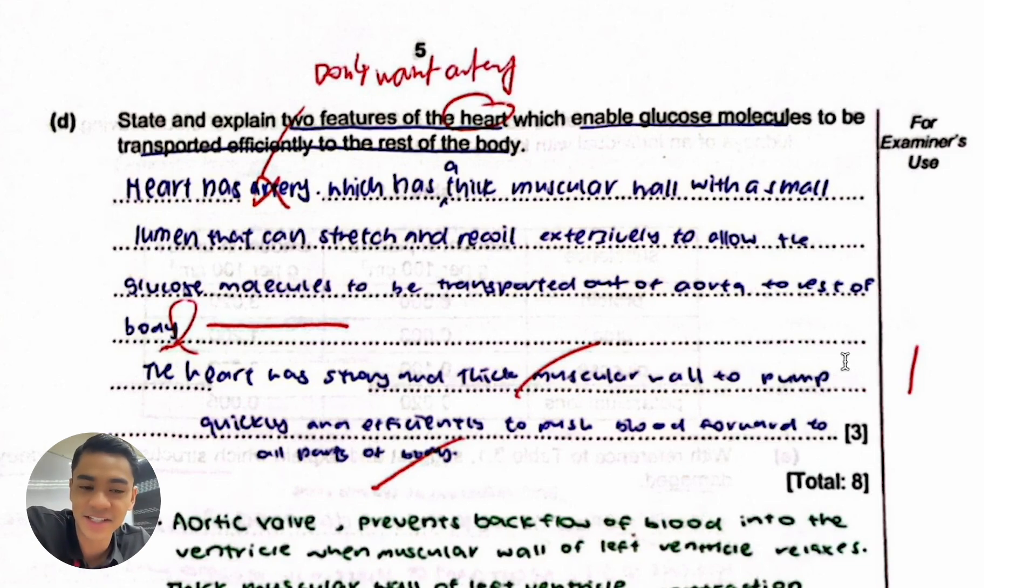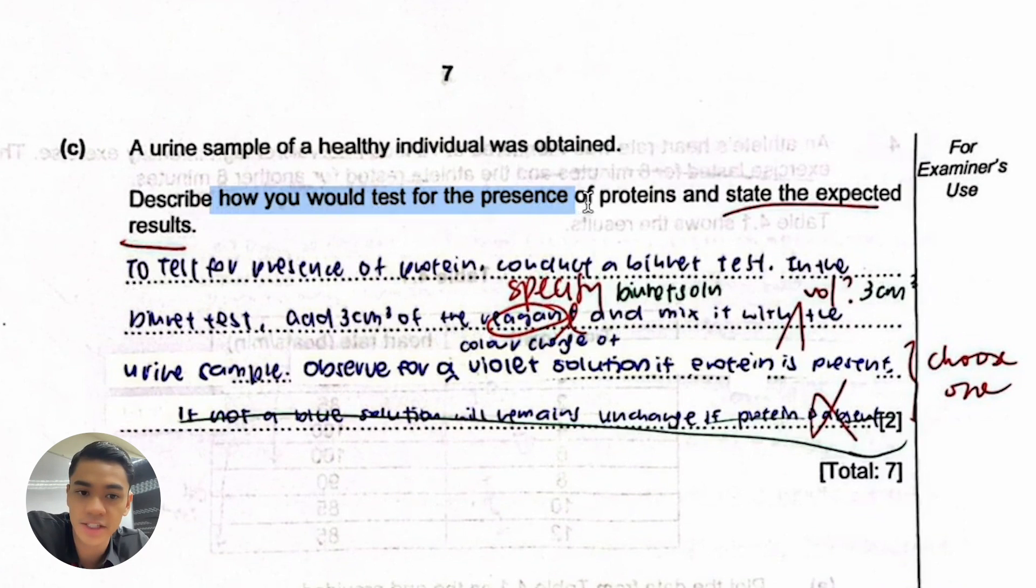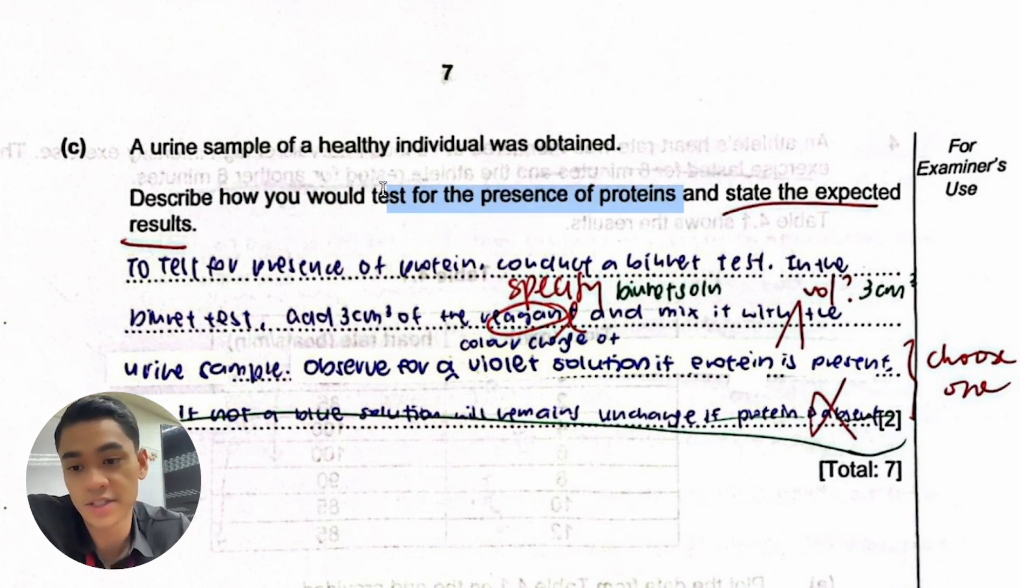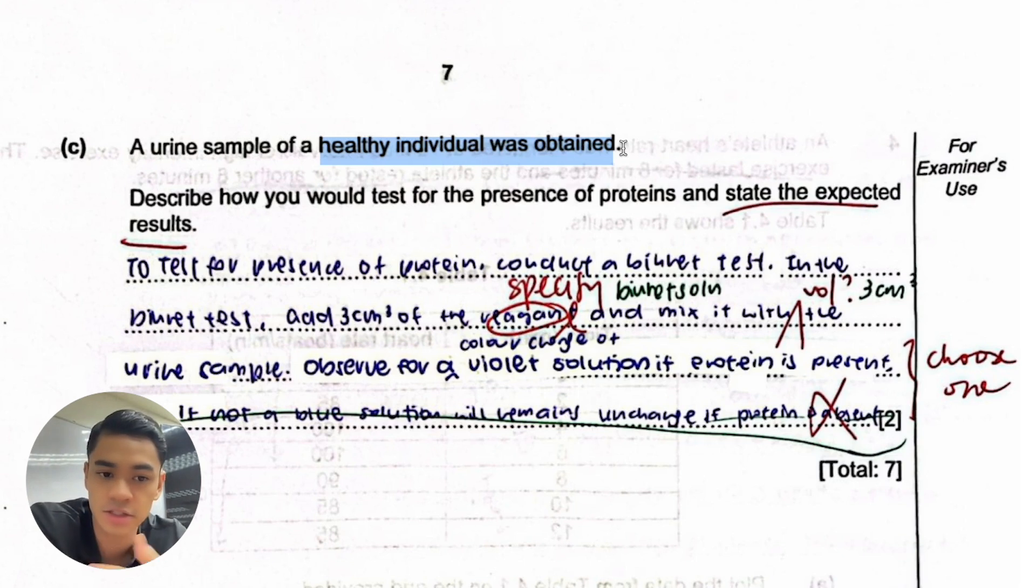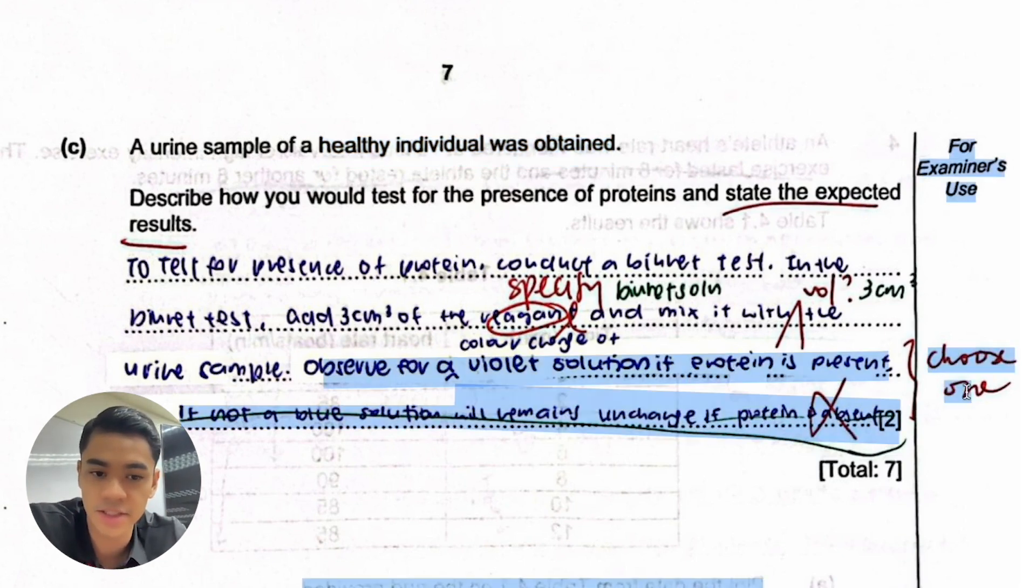They said how you would test for the presence of proteins, that's the first mark, and then state the expected results. What I expect in this answer is give me the test and then tell me for a healthy person would it be positive or negative test. Proteins are not supposed to pass through the partially permeable basement membrane because they're too large, so it won't be fine in urine and should be negative test. But you're saying here two possible observations, so again not answering the question.